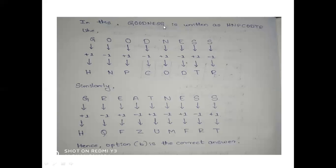In this, goodness is written as H-N-P-C-O-D-T-A-R. Goodness is written as H-N-P-C-O-D-T-A-R. So, here, G+1 is H, O-1 is N.